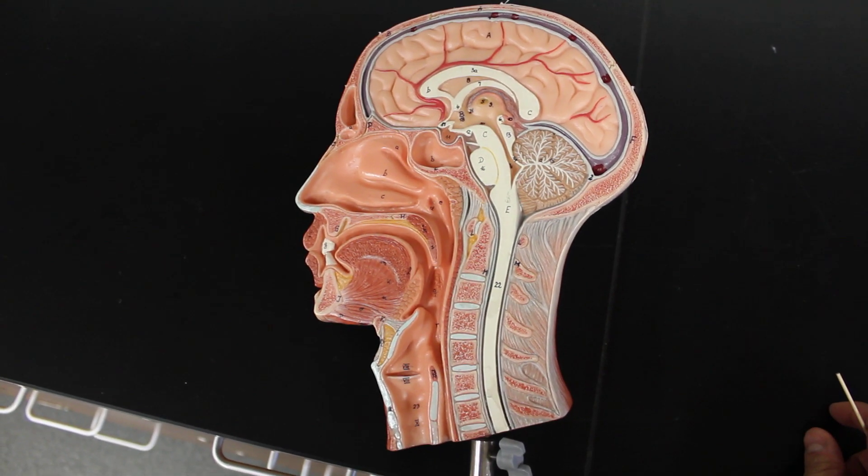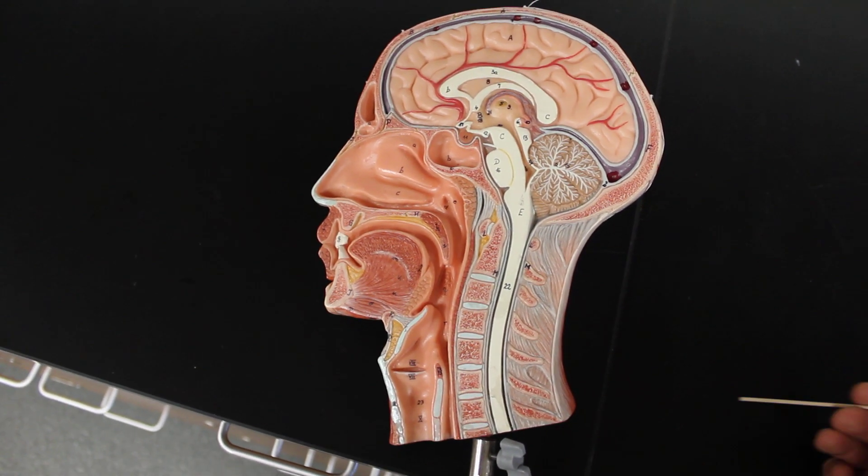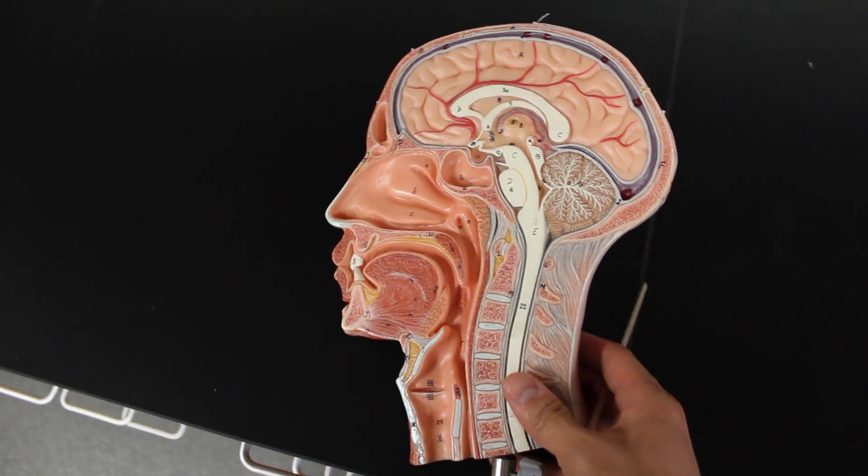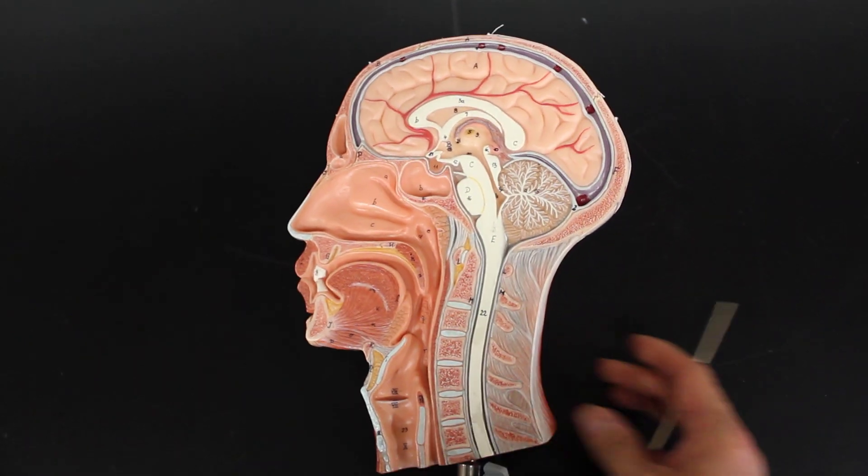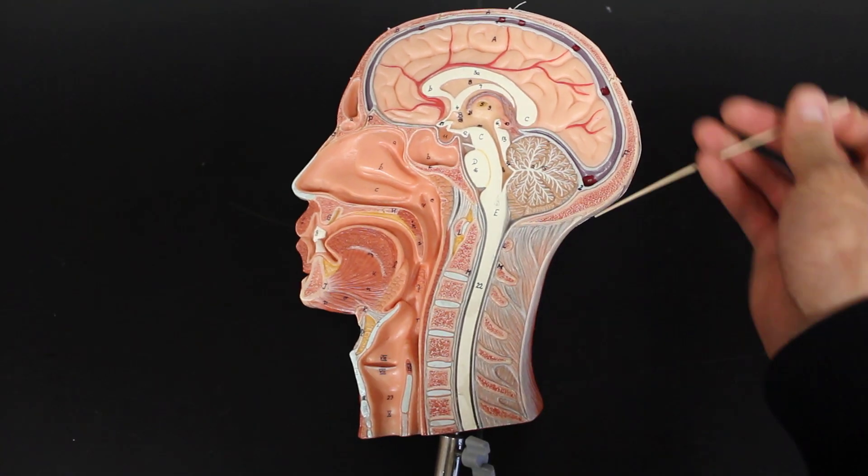As we explore the respiratory system, we need to look at how the air moves from one place to the next. This is what we're going to take a look at, starting from the head because air comes in through the nose.